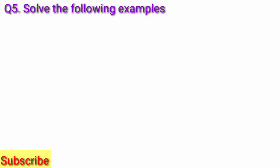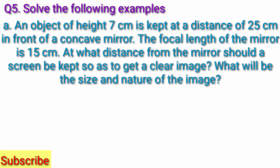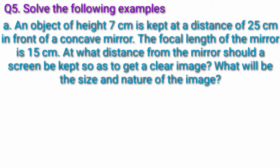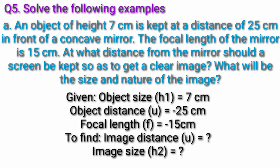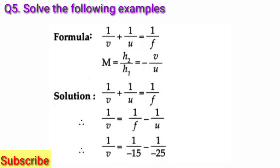Question 5: Solve the following examples. A: An object of height 7 cm is kept at a distance of 25 cm in front of a concave mirror. The focal length of the mirror is 15 cm. At what distance from the mirror should a screen be kept so as to get a clear image? What will be the size and nature of the image? Solution: Given — object size h1 = 7 cm, object distance u = −25 cm, focal length f = 15 cm. To find: image distance v and image size h2. Formula: 1/v + 1/u = 1/f and m = h2/h1 = −v/u.